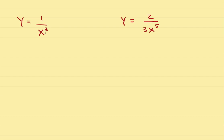What if you have the variable in the denominator? Sometimes you have to rewrite it. The rule is: get all the x's out of the denominator and get rid of radicals. Since this is x to the positive 3 in the bottom, move it to the top and make it x to the negative 3. Now find the derivative: bring the negative 3 down in front, subtract 1 to get negative 4, and you are done.